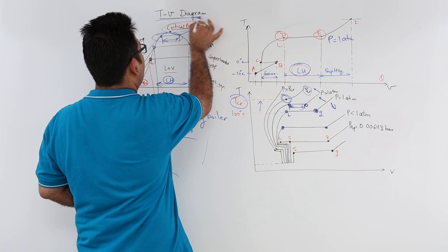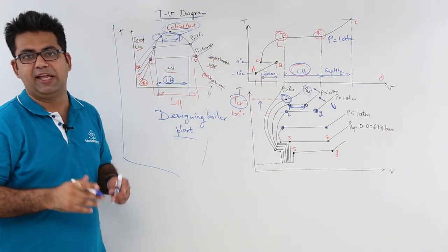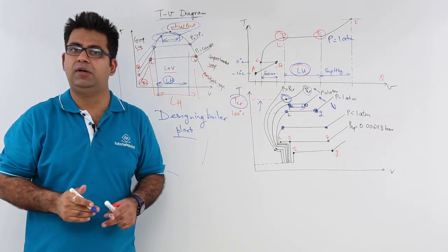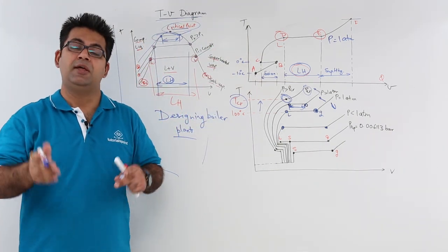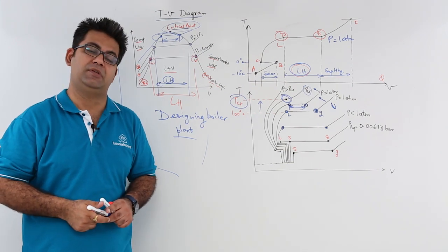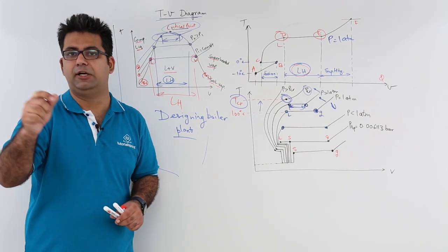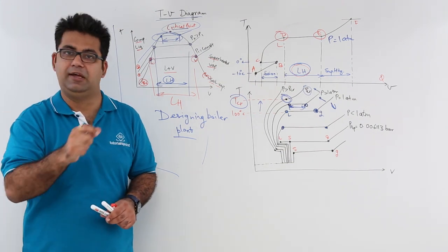That is what you need to understand from the TV diagram. Now let's move on to the next property diagram for pure substances and talk about the pressure-temperature diagram.